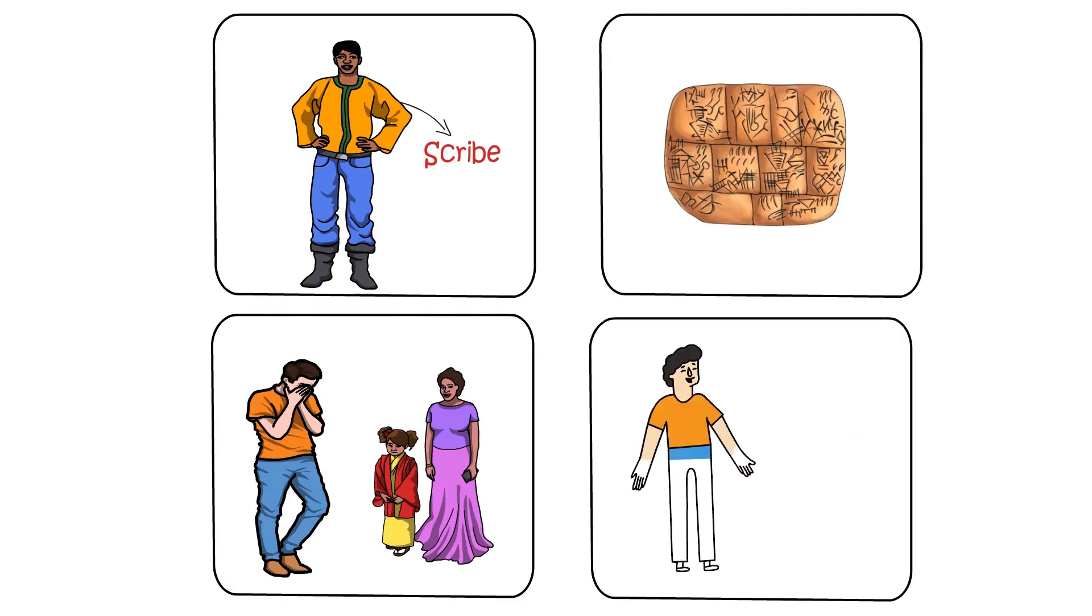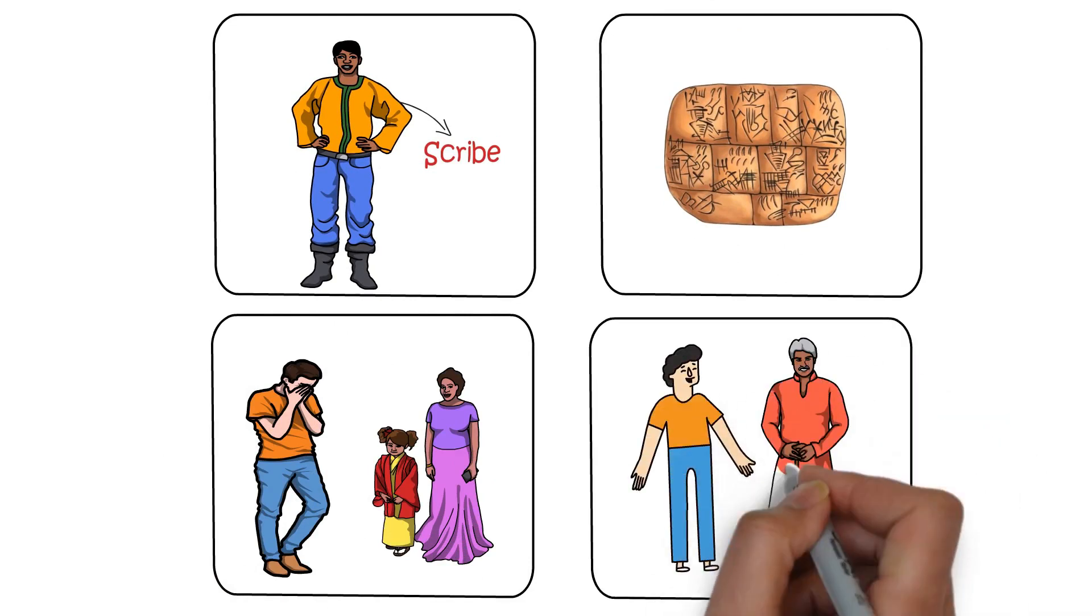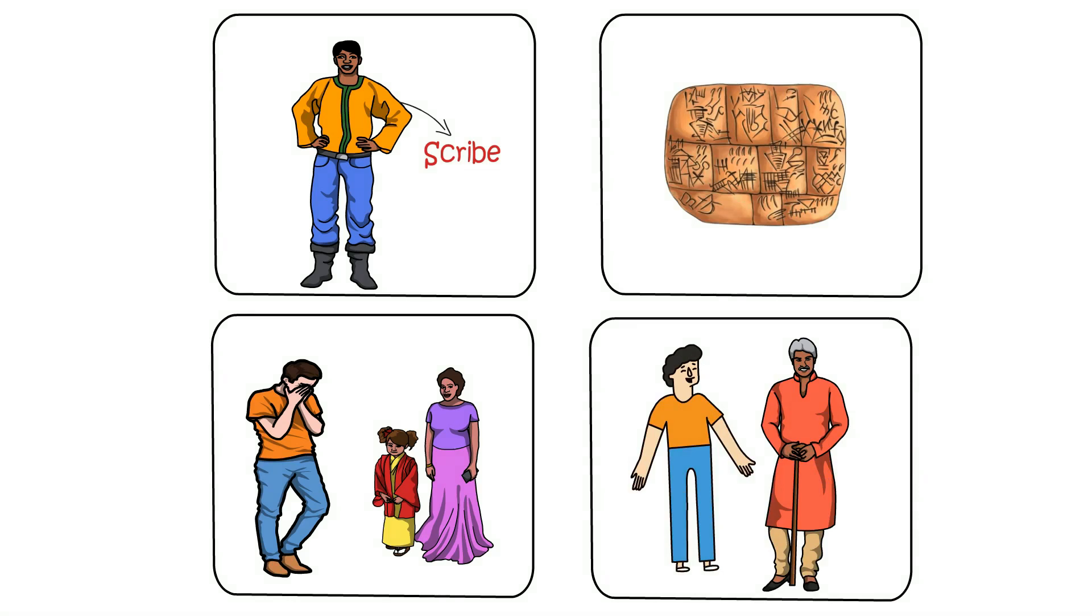One day, Arkad's fate turned around when he met Algomish, the moneylender, a very rich man. So, with a strong will, Arkad convinced Algomish to become his advisor and mentor him on money matters.